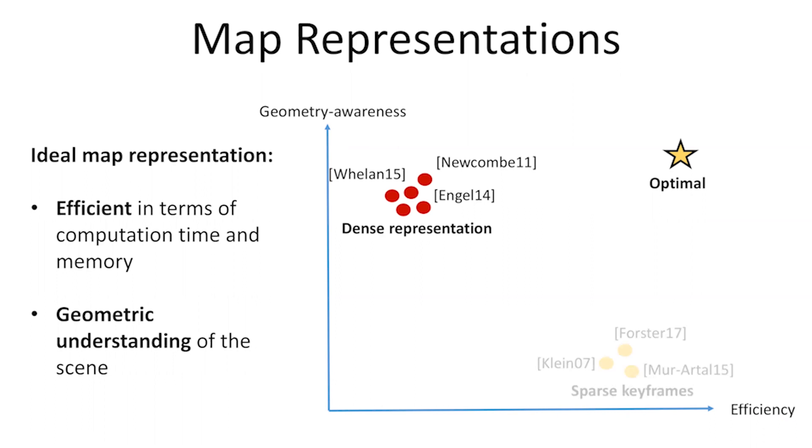On the other hand, sparse representations do not provide high-level understanding of the scene. Geometric primitive-based SLAM balances both but do not outperform sparse keyframe in terms of accuracy. This paper proposes voxel-based map representation for sparse SLAM that tries to move one step towards optimal map representations.